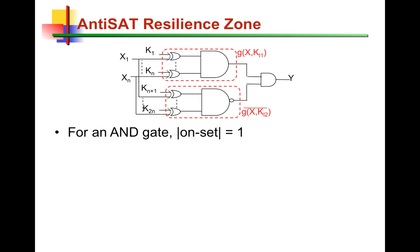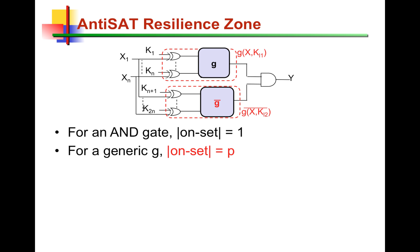This means that there is only one input pattern producing an error, so the effectiveness of the DIPs will be quite limited. To generalize, we can have a general block G with an onset magnitude of P — a block that produces a 1 for P different input patterns — used in place of G. In that case, the number of patterns producing the error and injecting it into the original circuit would be P. So it's an adjustable parameter.